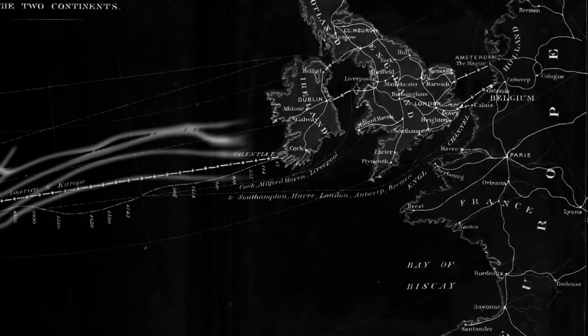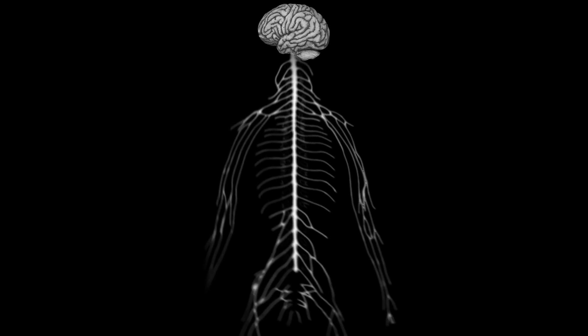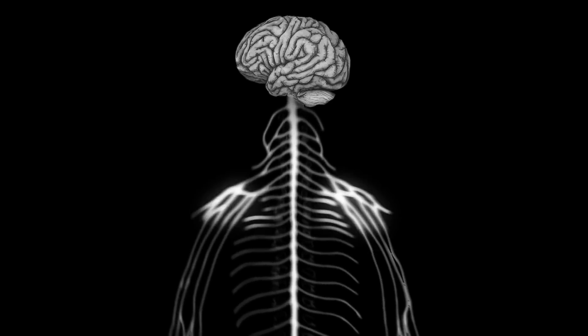Coinciding with the spread of telegraph cables in the 1800s, 19th-century thinkers compared the nervous system to a telegraph network. The analogy lives on today when we talk of signals being transmitted from the nerves to the brain.